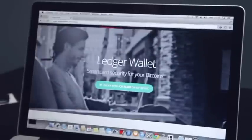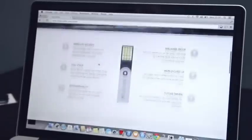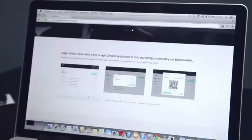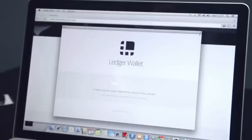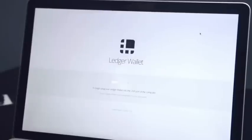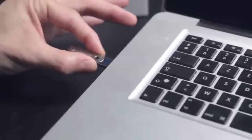First of all, open your Chrome browser and go to my.ledgerwallet.com, follow the simple instructions and install our Ledger Wallet Chrome application. Plug your Ledger Wallet in a USB port.